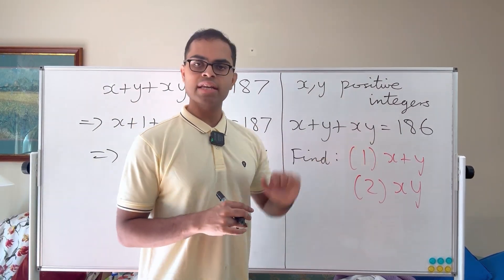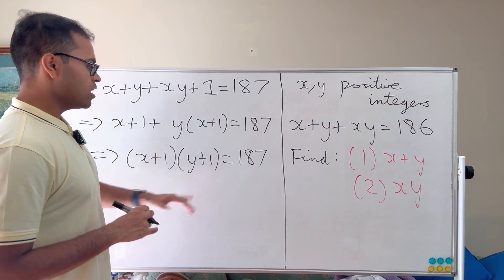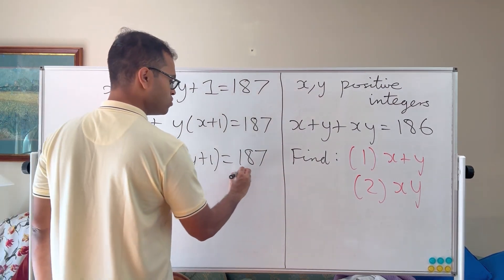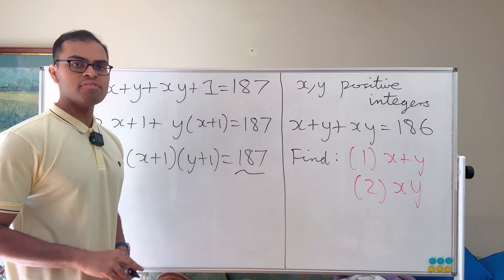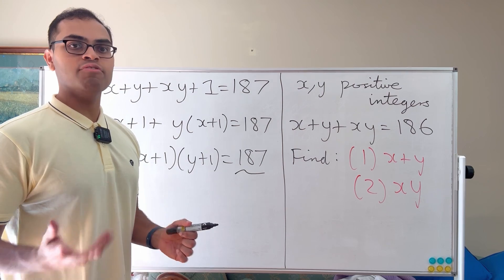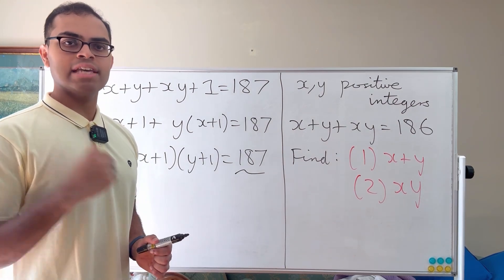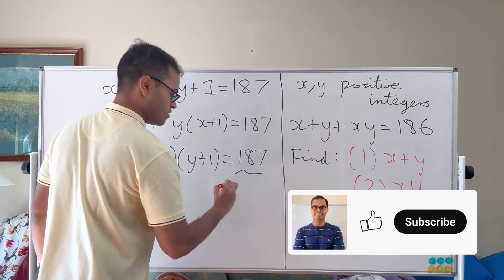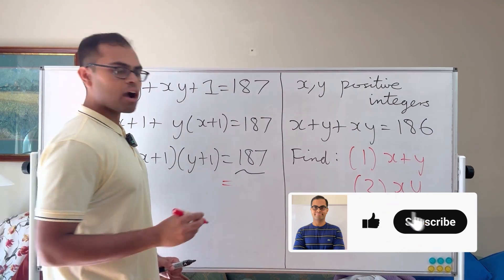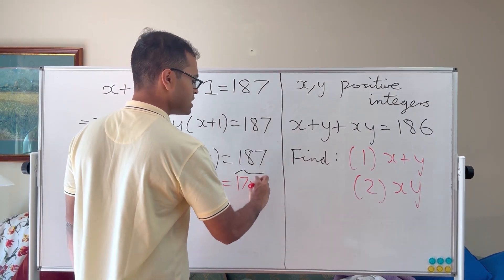So if we can somehow factor out in this way, we get this. Now we need to understand when can two numbers multiply to be 187. x plus 1 and y plus 1 have to be numbers that are at least 2 because x and y are positive integers. And now we know 187, you can actually factor this out. It turns out to be 17 times 11.